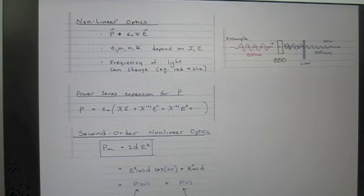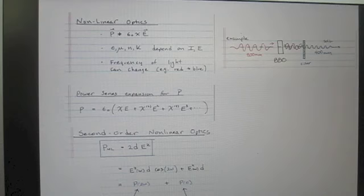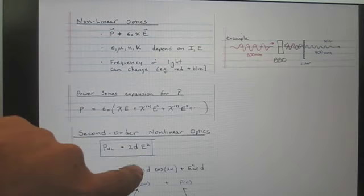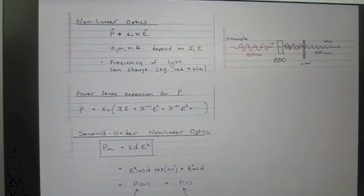Thus, if a high-intensity beam at, say, 800 nanometer wavelength passes through a crystal with a large second-order nonlinear coefficient, it can lead to generation of a beam at 400 nanometers.